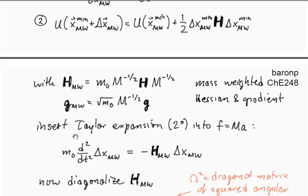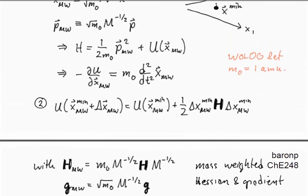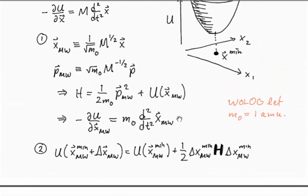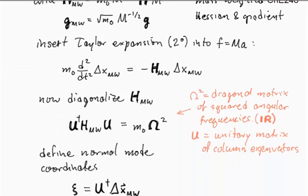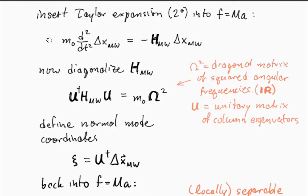So now we're going to insert the Taylor expansion up to second order into our F equals mA equation. We're going to insert this second order approximation into that equation and simplify, and what we get is F equals mA. A very simple linear equation, and now we know what we can do. We can go through and we can diagonalize the mass-weighted Hessian.